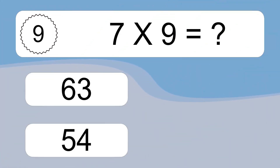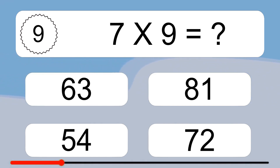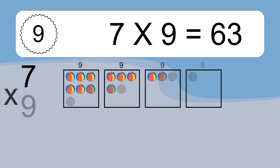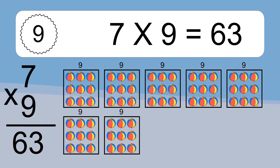7 times 9 equals what? 7 times 9 equals 63. We have 7 boxes and each box has 9 colorful balls inside. If you count all the balls in all the boxes together, you will have 7 times 9 balls. This equals 63 balls.